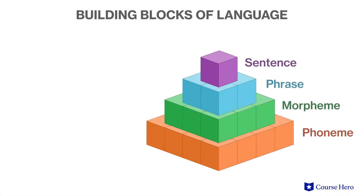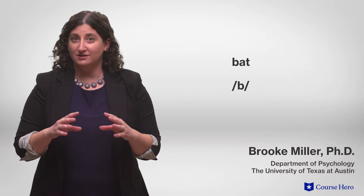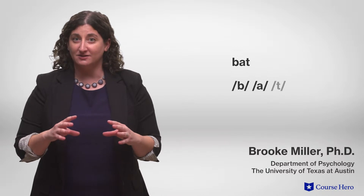Human language has a hierarchical structure. At the base are phonemes, the smallest units of speech that can be distinguished and named. For example, the word 'bat' consists of three distinct sounds: b, a, t.